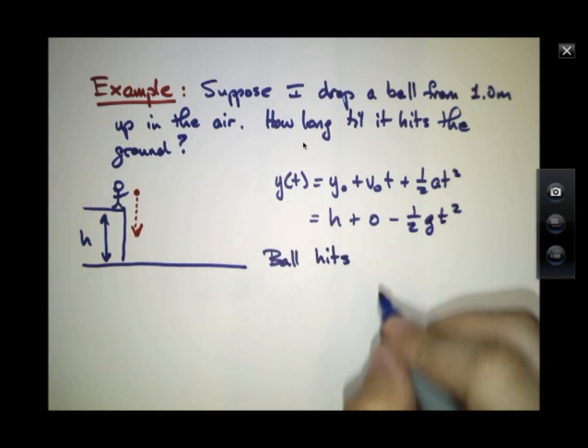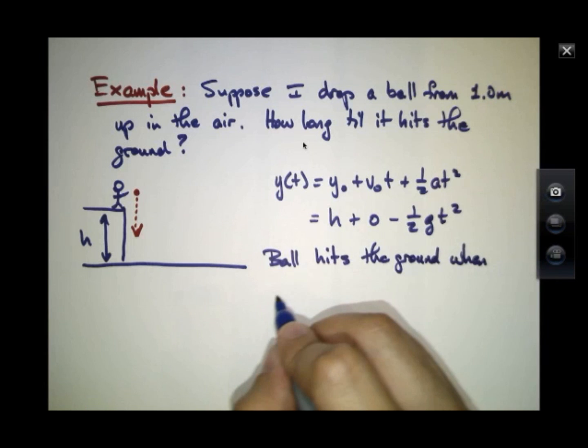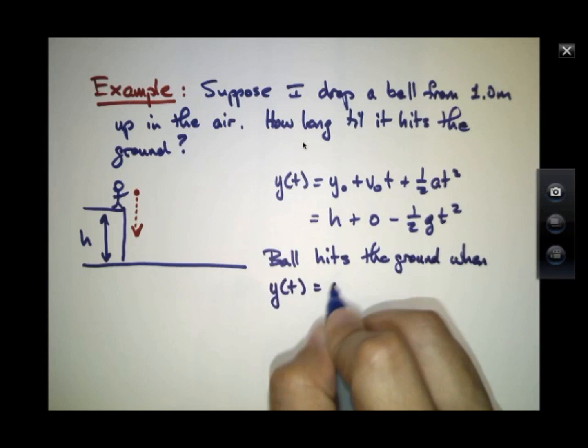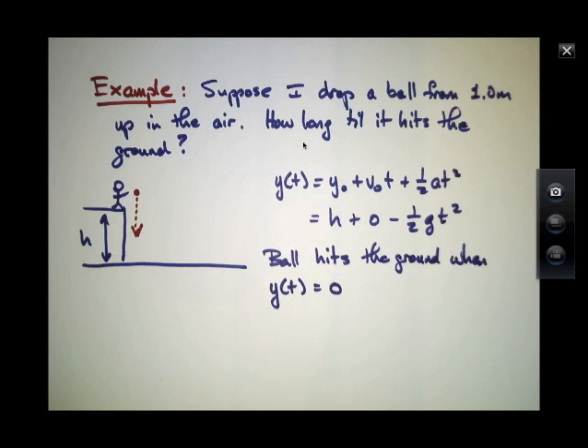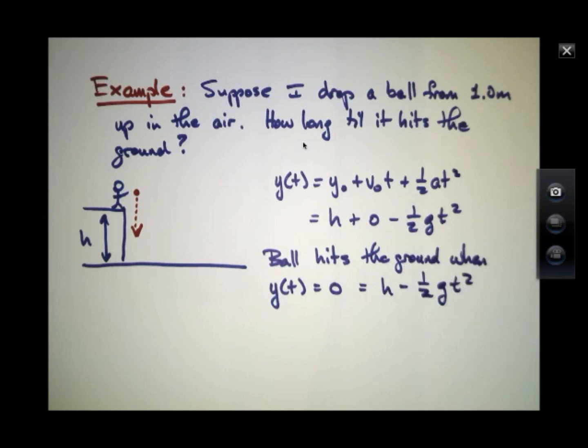Now if the ball hits the ground, then y of t equals 0. I don't necessarily know when that time is, but I know at that time, this function of y should return 0. So I'm going to put in that that's equal to h minus 1 half g t squared. If I move this term over to the left side, I have 1 half g t squared is h. And I wanted to solve for the time. So I'm going to multiply by 2 and divide by g and take a square root.